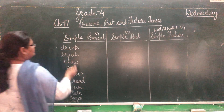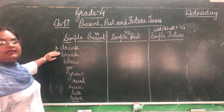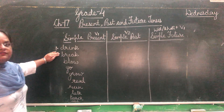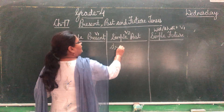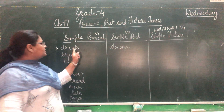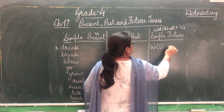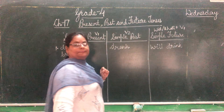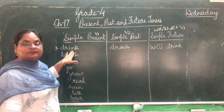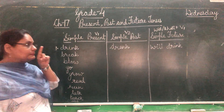The first verb is drink. Can you tell me what is the past of drink? The past of drink is drank — D-R-A-N-K. Drink, drank, and for simple future: will drink. Now let us make sentences using these verbs. First, a sentence with the simple present form: drink.